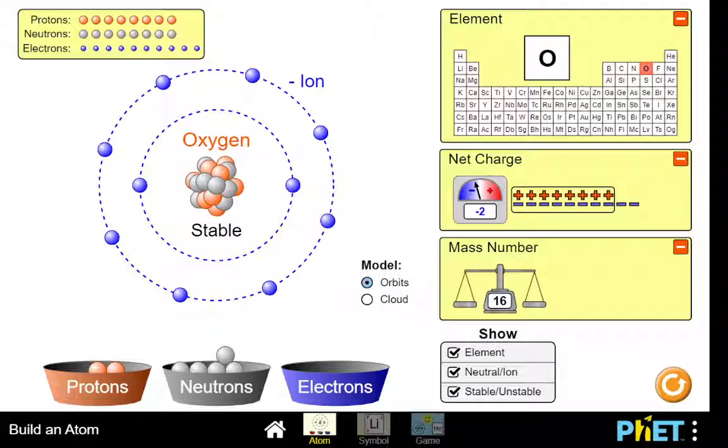So this is a standard stable negative 2 oxygen ion, and of course if I add too many neutrons, it's going to destabilize it. But you can check whether or not you want to see if it's stable or not.